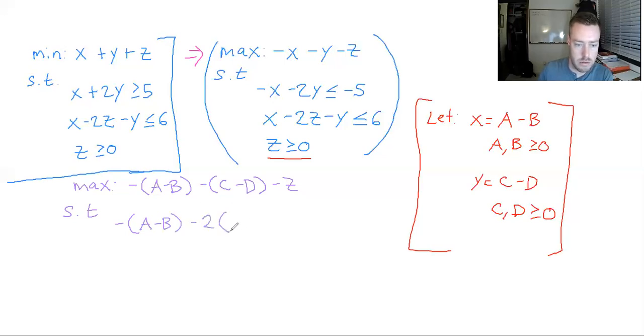Is less than or equal to negative 5. And then we have x down here, but x is really just A minus B, minus 2z, minus y. Well, y was equal to C minus D, is less than or equal to 6.